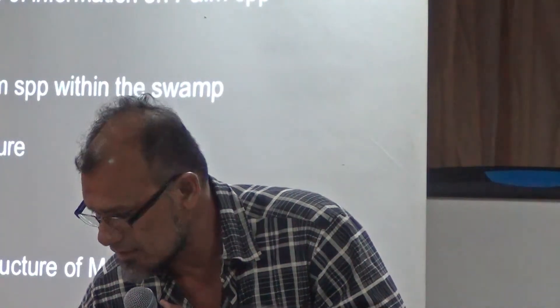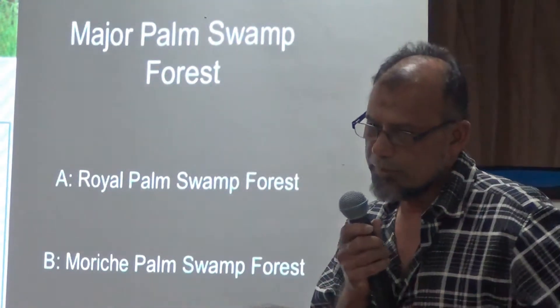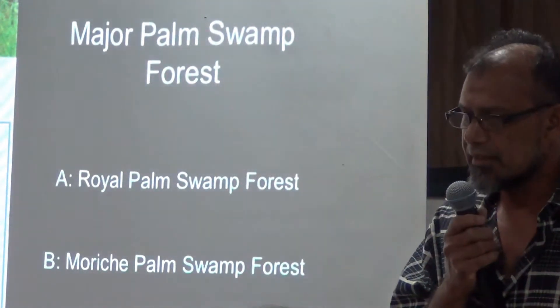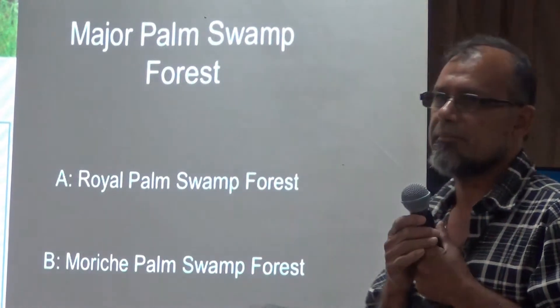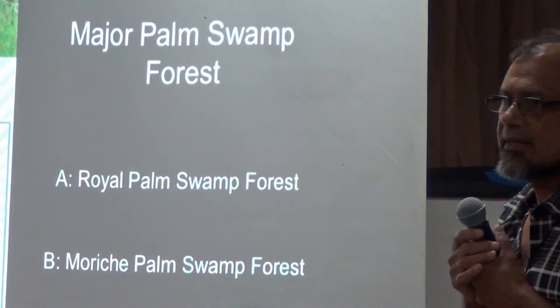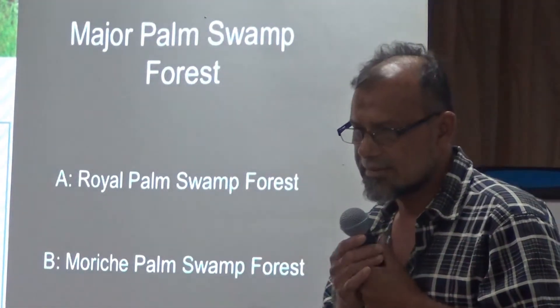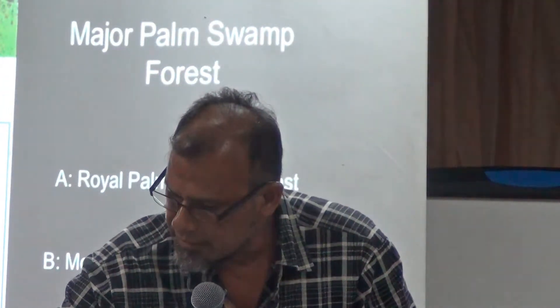This is the baseline study. What I want to point out is that there are two important palm species here: the Moorish palm and the Roystonea palm. The birds and parrots are all dependent on those. They are focused mainly on the eastern part of the swamp.